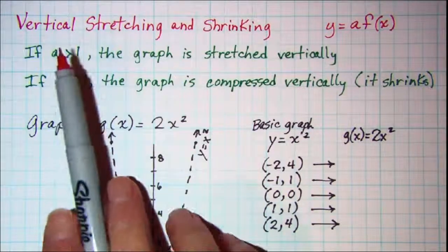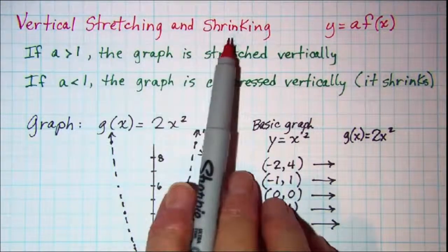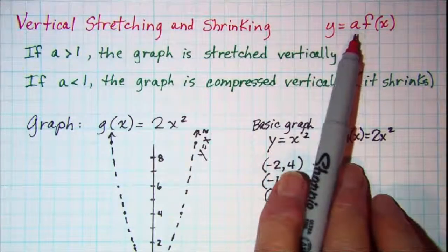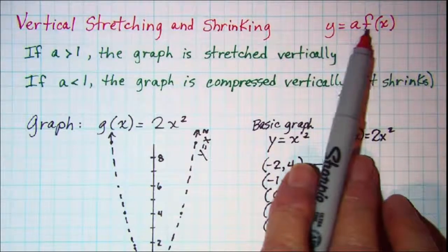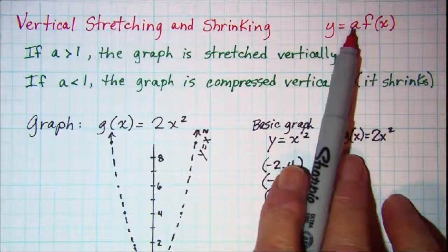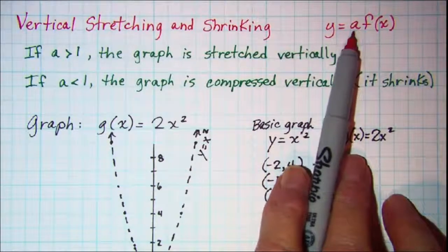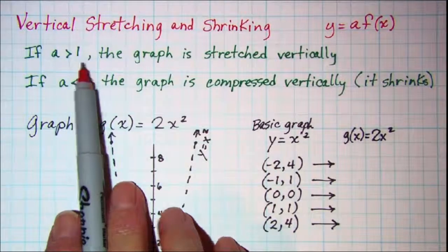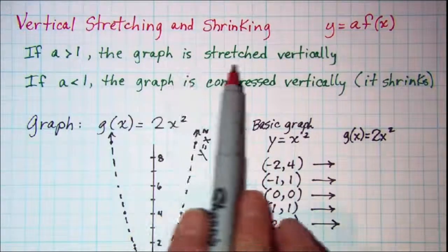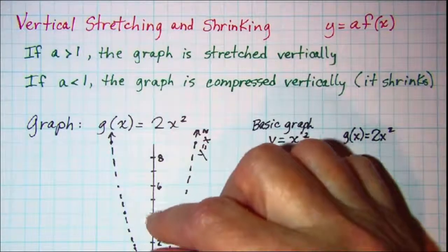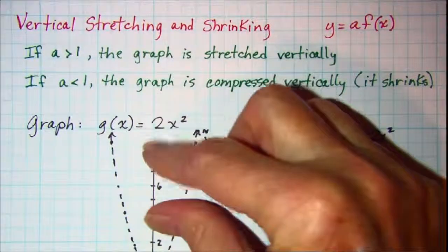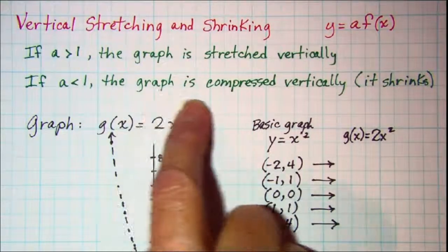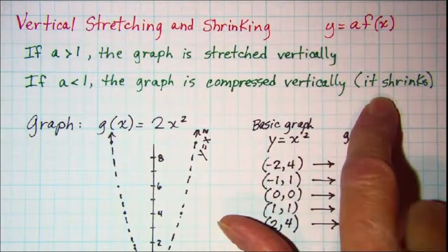In this video we'll be looking at vertical stretching and shrinking, given by the generic equation y equals a times f of x. Now we know f of x is the same as y, so we're multiplying some number a times y. If a is greater than 1, the graph is stretched vertically, so our graph will be stretched up and down. If a is less than 1, the graph is compressed vertically or it shrinks.